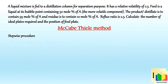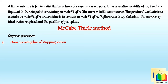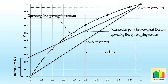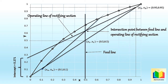The fifth step is to draw the operating line of the stripping section. From the graph, we can identify the intersection point between the feed line and the operating line of the rectifying section. So there is no need to separately find the slope and intercept of the stripping section operating line. We plot the point (xW, xW) = (0.1, 0.1) on the diagonal, then draw the stripping section operating line from that point through the intersection of the feed line and the rectifying operating line. In this way, we obtain all three lines: the rectifying operating line, the stripping operating line, and the feed line.